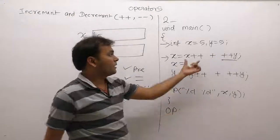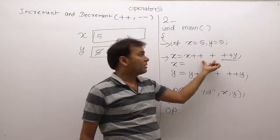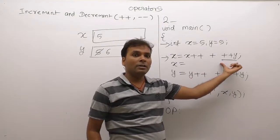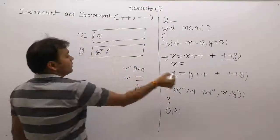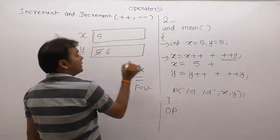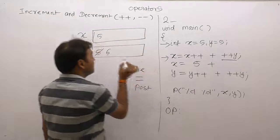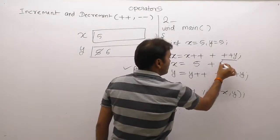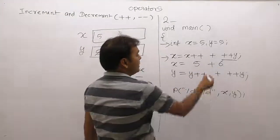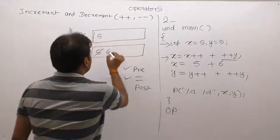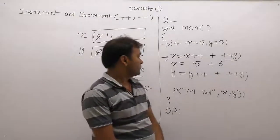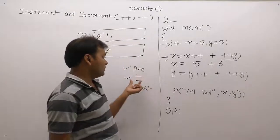For the assignment step, we replace x++ with the current value of x, which is 5. Then ++y is replaced by the current value of y, which is already 6 because of the pre-increment. So we get 5 plus 6 equals 11. The value 11 is assigned to variable x, so x becomes 11.